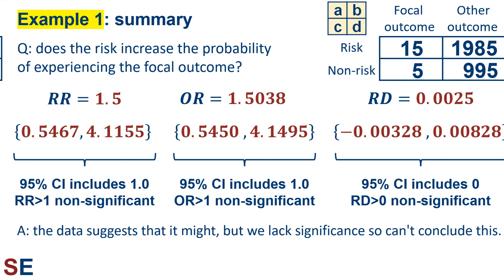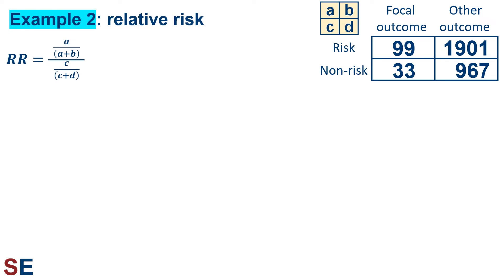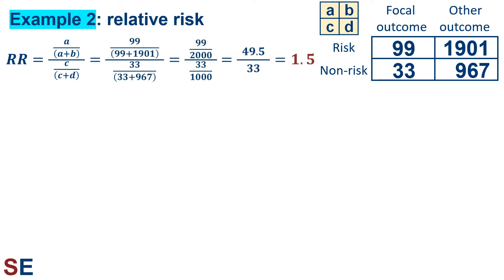Now let's look at another example. In this second example, I've kept the total number of values in each risk group the same — 2,000 versus 1,000 — but I've increased the number of observations in the focal outcome column. As before, the effect of the risk is to increase the rate of the focal outcome by 50% since there are three times as many values there. We need to calculate confidence intervals, which means natural logs and exponentiation.